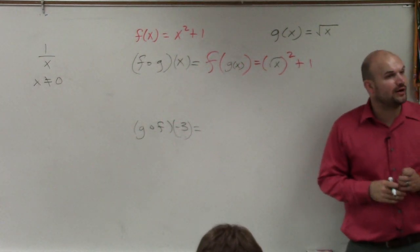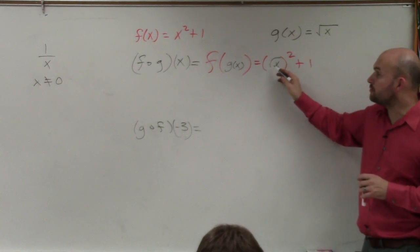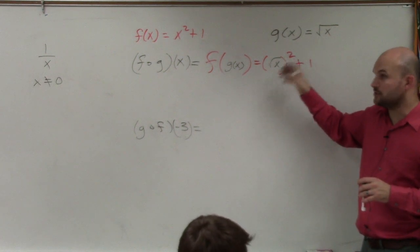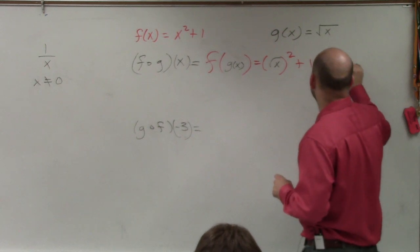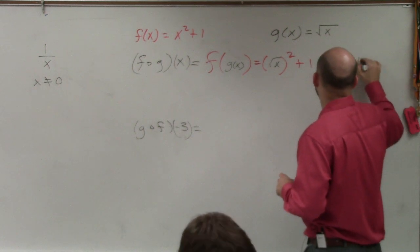So now, we go ahead and simplify. The square root of something squared, those are going to undo each other. So we're left with x plus 1.